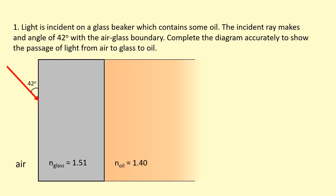Light is incident on a glass beaker which contains some oil. The incident ray makes an angle of 42 degrees with the air-glass boundary. We need to complete the diagram to show the passage of light from air to glass. Firstly, draw on the normal where the light hits the glass. The 42 degrees is not the angle of incidence — the angle of incidence is 90 minus 42, which is 48 degrees, measured between the normal and the ray.